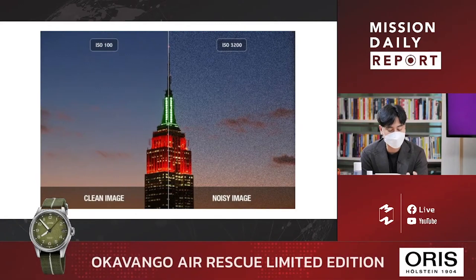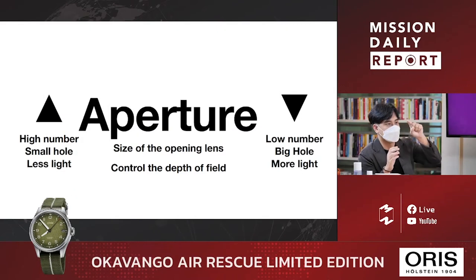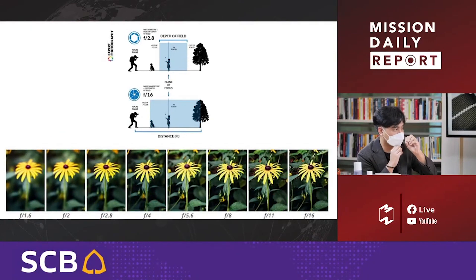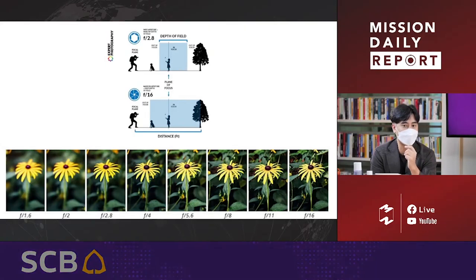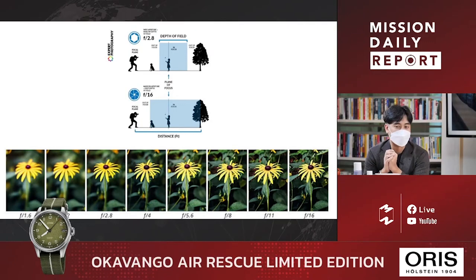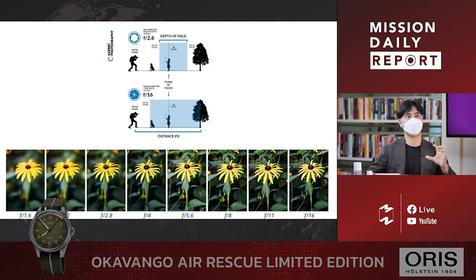The aperture is next. When you look at the lens, you can see it's like a wall or opening. A higher aperture value means the image changes. The aperture controls how much light enters the lens and affects the image.